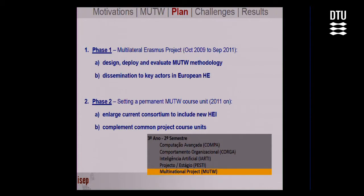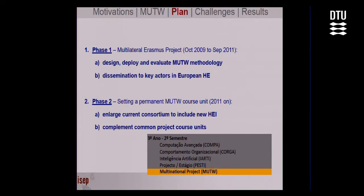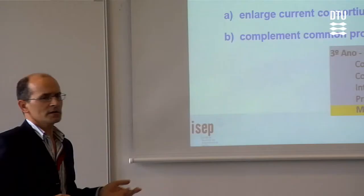The proposal was divided into phases. Phase one was funded in the context of the Erasmus project from 2009 to 2011, and has just finished. The idea was to design, deploy, evaluate, experiment, and iterate, and also to disseminate this to key actors in European institutions. Phase two, which is now beginning, is to set a permanent course unit in the institutions which adhere to this kind of international project, such as EZ.